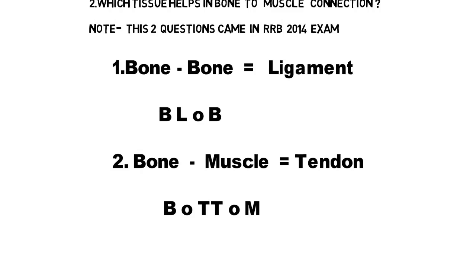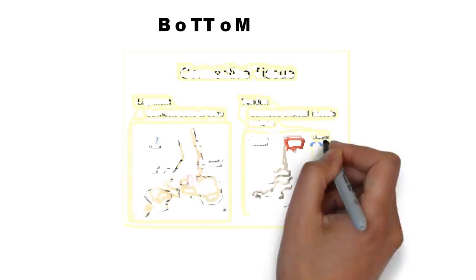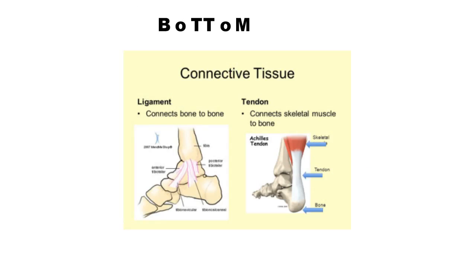In BOTTOM — B stands for bone, T stands for tendon, M stands for muscle. So this one word covers all three important terms. Try to remember these two words — they are very important: BLOB and BOTTOM. You can also see the image here — ligament helps in bone-to-bone connection and tendon helps in bone-to-muscle connection.